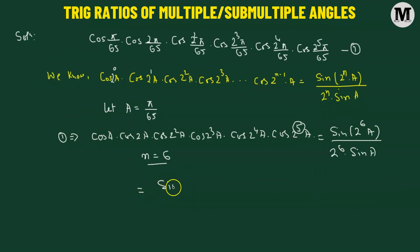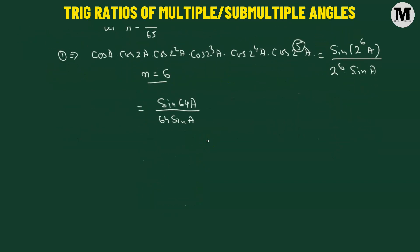We should get sine of 2 raised to the power of 6, so that's 64. We have sine 64A divided by 64 times sine of angle A. Now, what's A? A is pi over 65, which means that our expression is now given by sine 64 pi over 65.